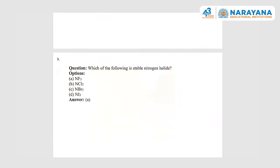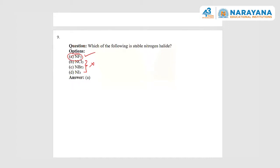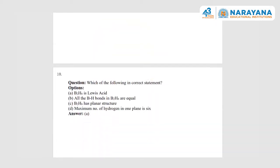Next question: which of the following is a stable nitrogen halide? NCl₃, NBr₃, and NI₃ are very unstable at room temperature and exposure to light, whereas NF₃ is stable at room temperature. This is a direct question — NF₃, nitrogen trifluoride, is the stable halide; the remaining halides of nitrogen are very unstable. Option A is the answer.